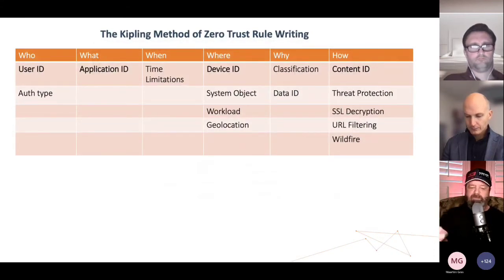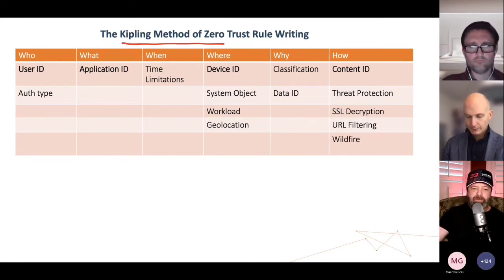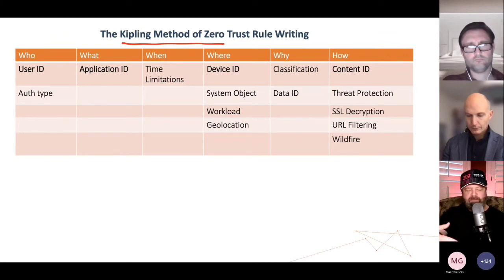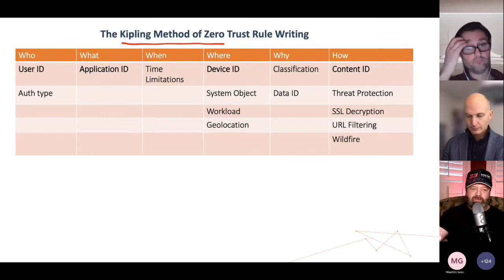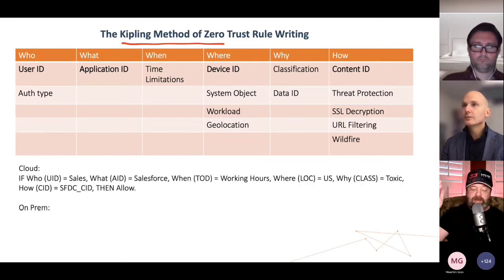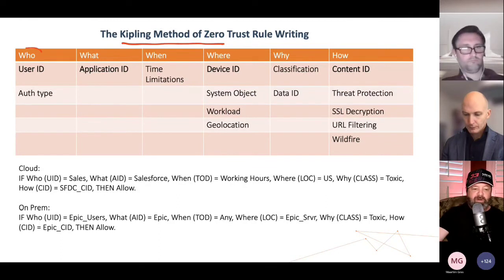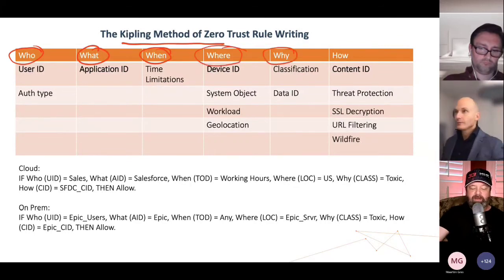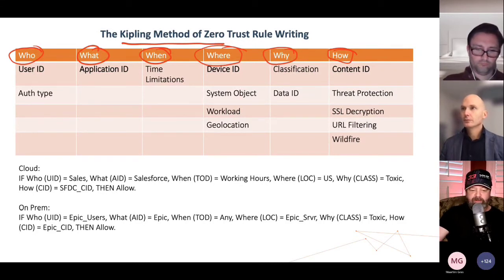This is the Kipling method of Zero Trust rule writing. Rudyard Kipling gave us the idea of who, what, when, where, why, and how in a poem in 1902. Every culture and language has the same concept. So we can use this to create very specific, easy-to-read, easy-to-write, easy-to-understand, and easy-to-audit policy statements — defining a who statement: who should have access to a resource, via what application, when should they be allowed, where is that located, why is it important, and how should we protect it.